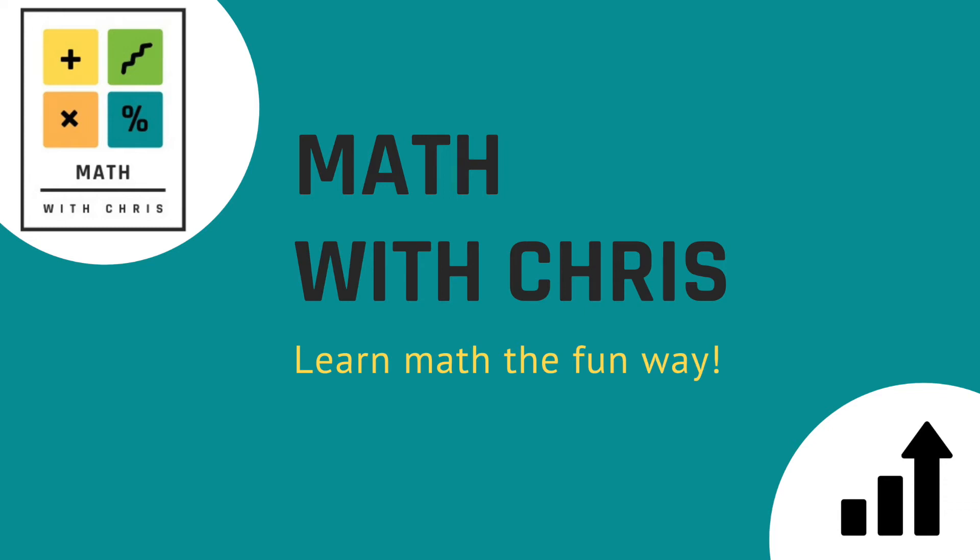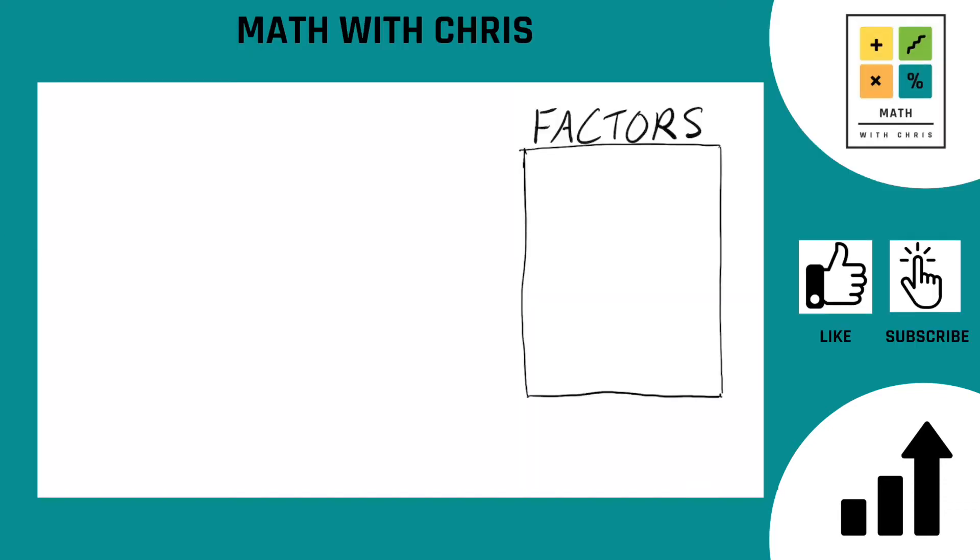Hello everyone, Math with Chris. Let's find the factors of the number 40. There we go. Well, what do we do first? We all know that. Bank the two easy ones, that's 1 and the number itself, 40.